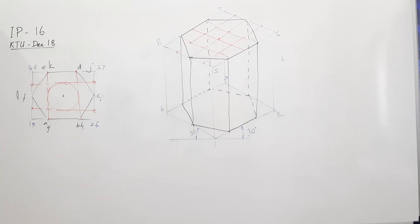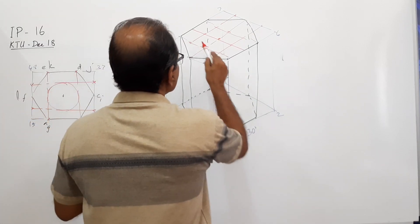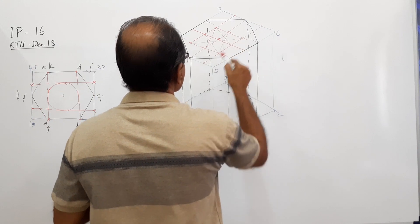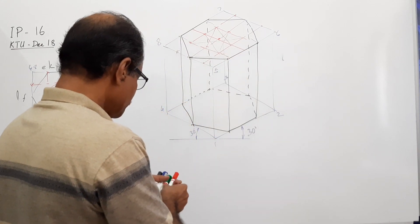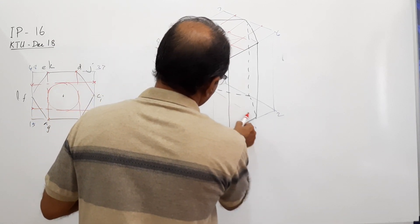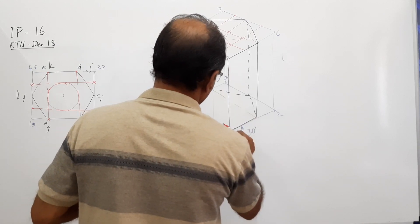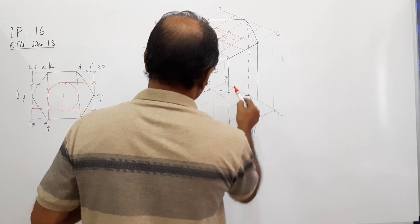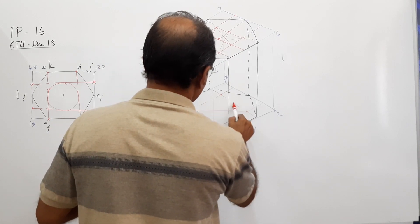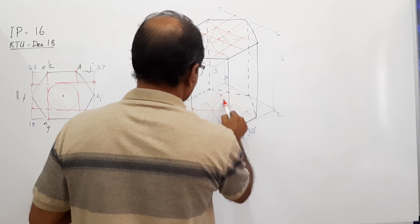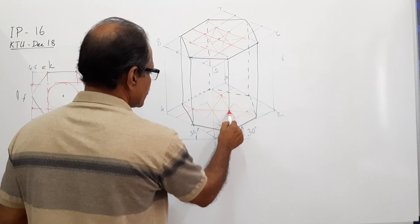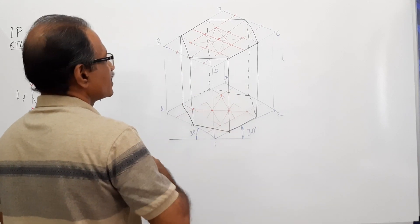Inside this rhombus, you have to construct the ellipse. You know the method of constructing the ellipse? Join the larger diagonal, join the obtuse angles to the centers of the sides, then do the same thing. You can locate the, draw the rhombus here also. Larger diagonal, join the center to the obtuse angles to the centers of the opposite sides.